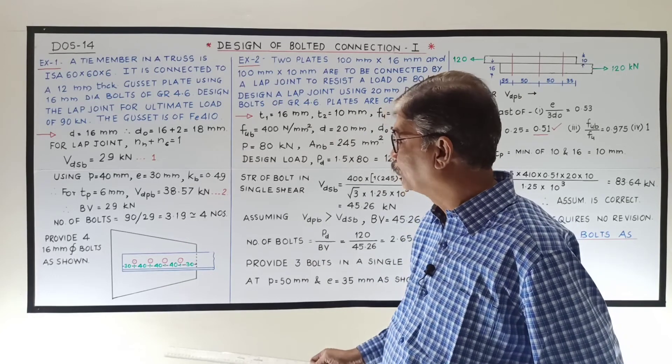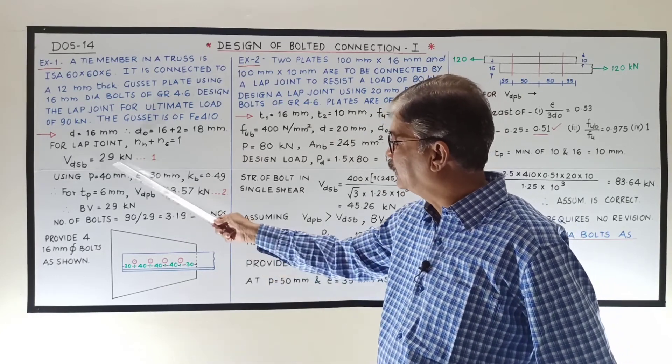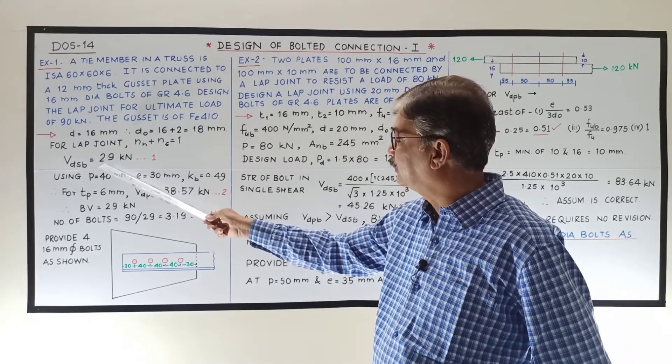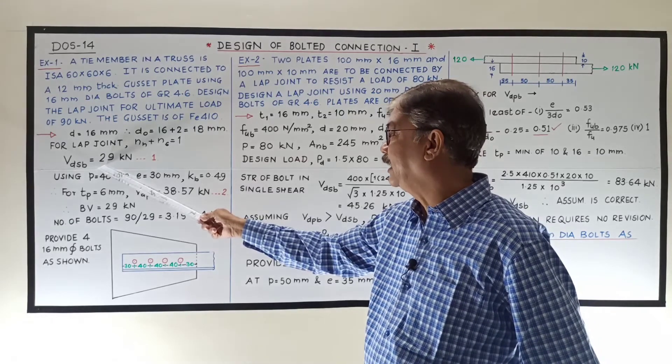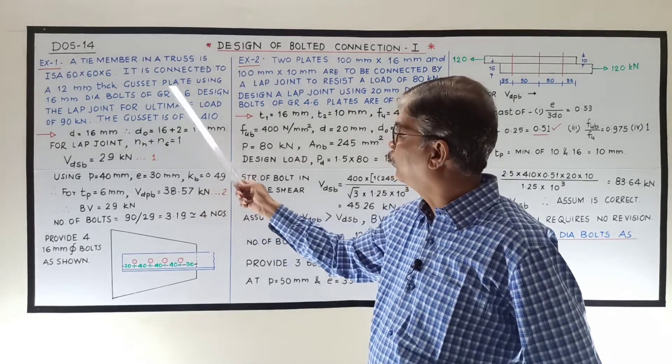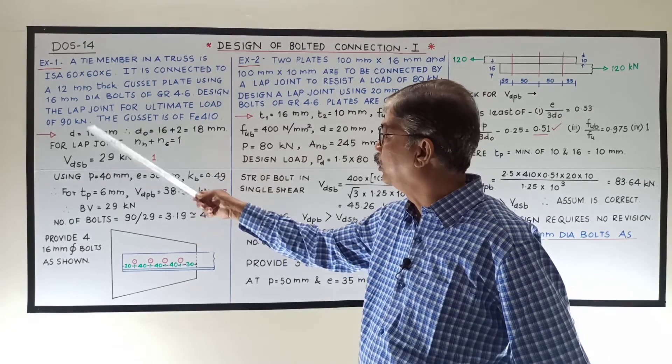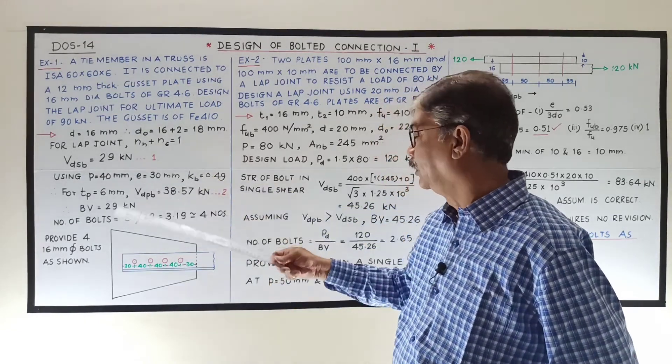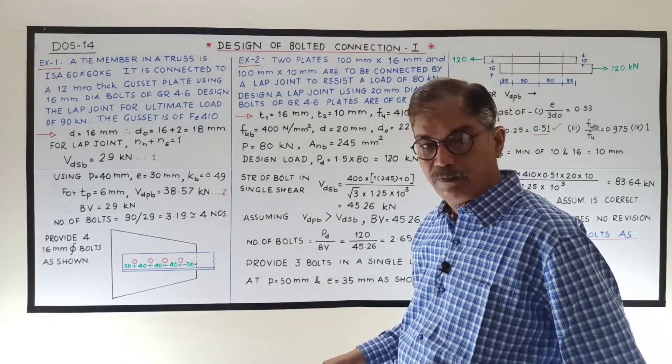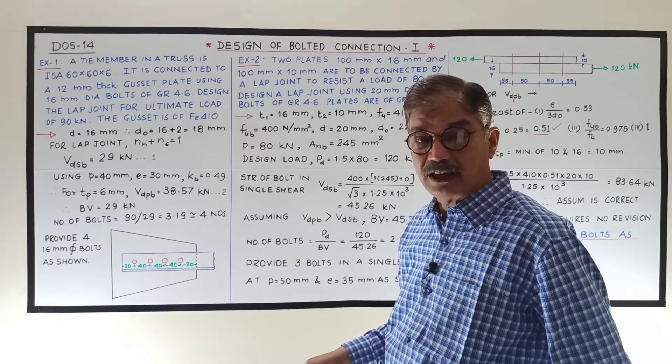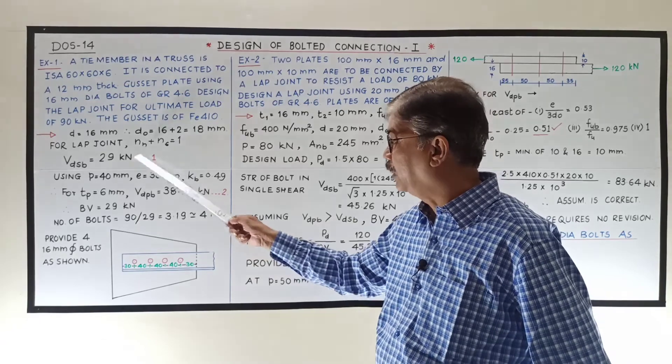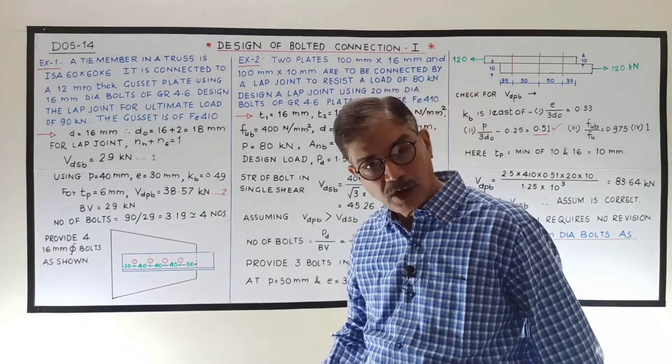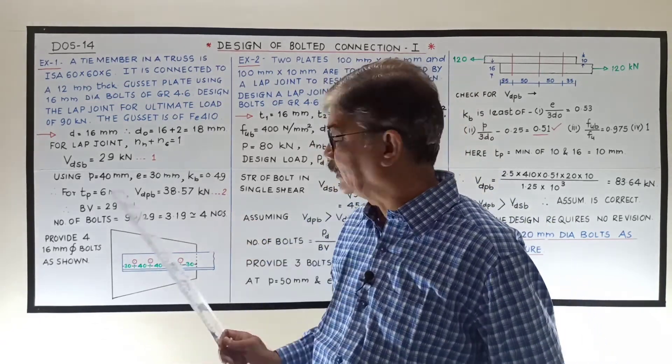Do you follow this? So you calculate these. So as we are doing it every now and then, we know that for 4.6 grade bolt of diameter 16 mm, it is 29 kilonewton. So calculate it as usual. It is not expected that you should write in the exam direct value. You should calculate it. So this is regarding the first example.